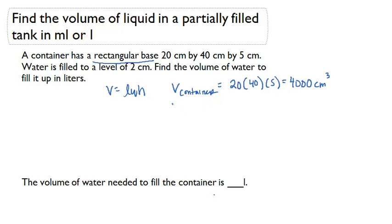Let's consider the volume of the water. That's going to be 20 times 40. But instead of being 5 centimeters high, the water is only 2 centimeters high. So that's really just 20 times 40 times 2, which is 1600 centimeters cubed.